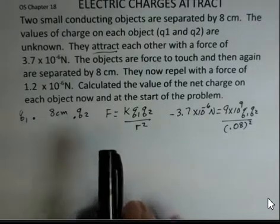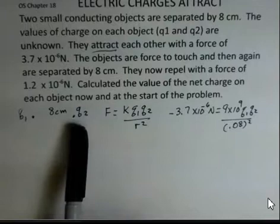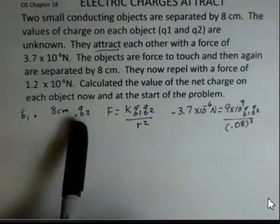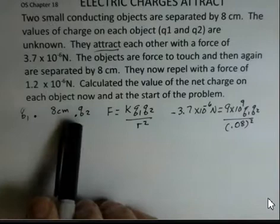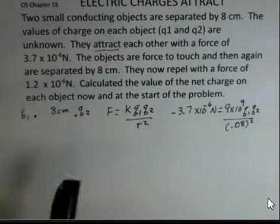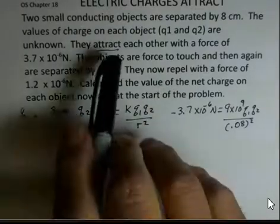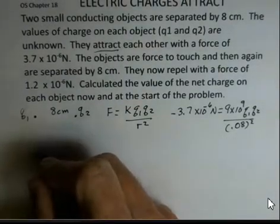The extra information is that someone with an insulated hand that doesn't remove any charge from Q2 picks up this object, makes it touch object one. The two objects share charge. They're conductors, so the charge can move freely. And now we replace the second object at 8 centimeters, and there's a different force. And now they're repelling, no longer attracting.